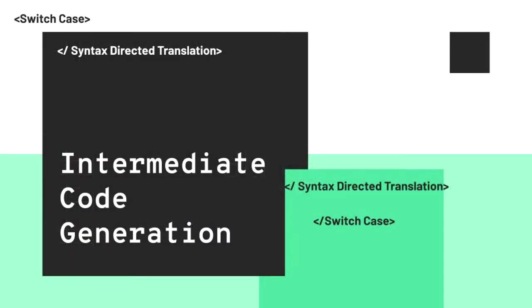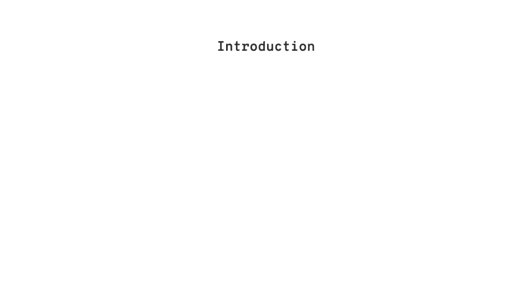Hello everyone, welcome to the fifth video of the compiler design series. In this video, we are going to study about intermediate code generation and its methods.